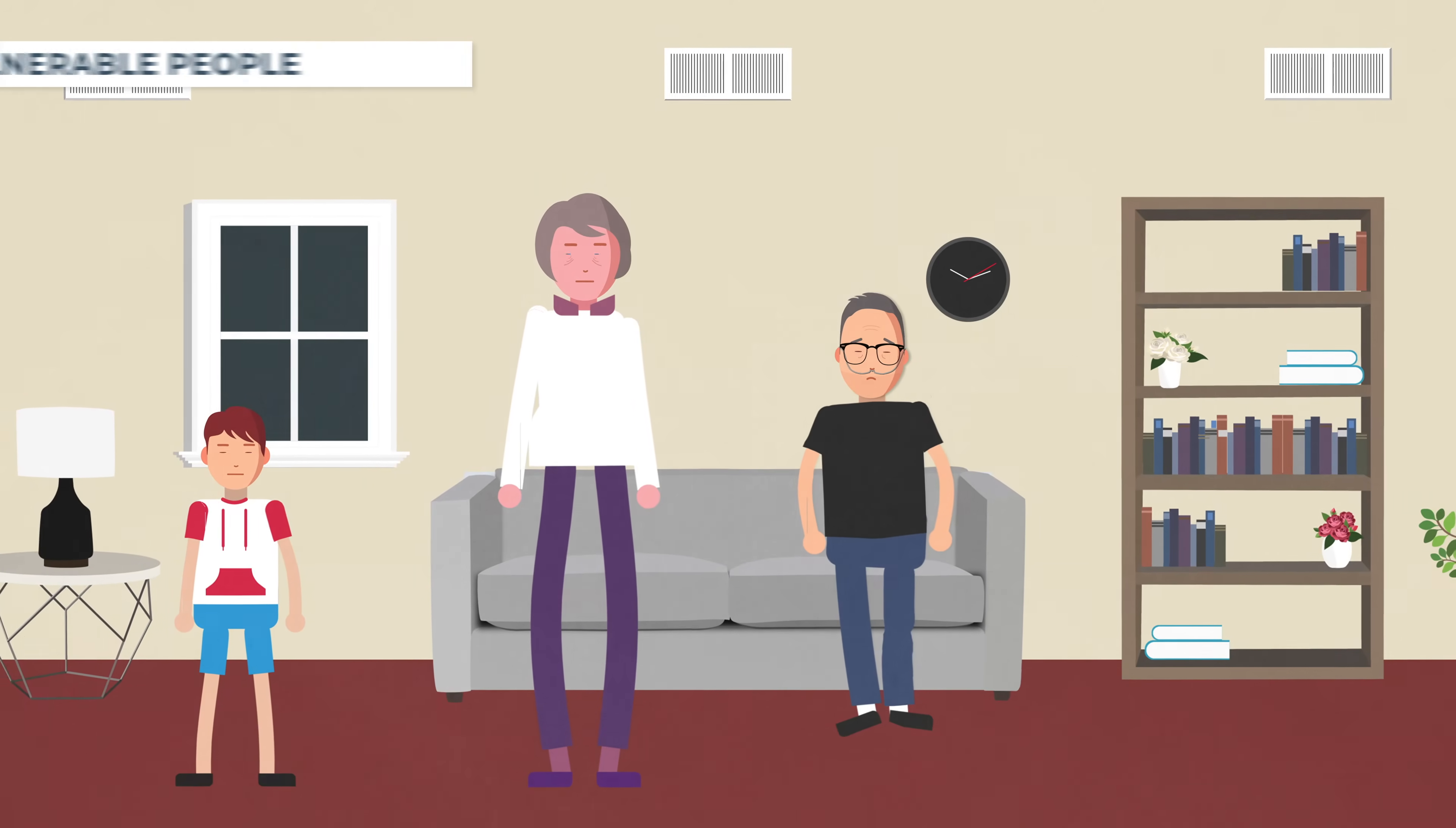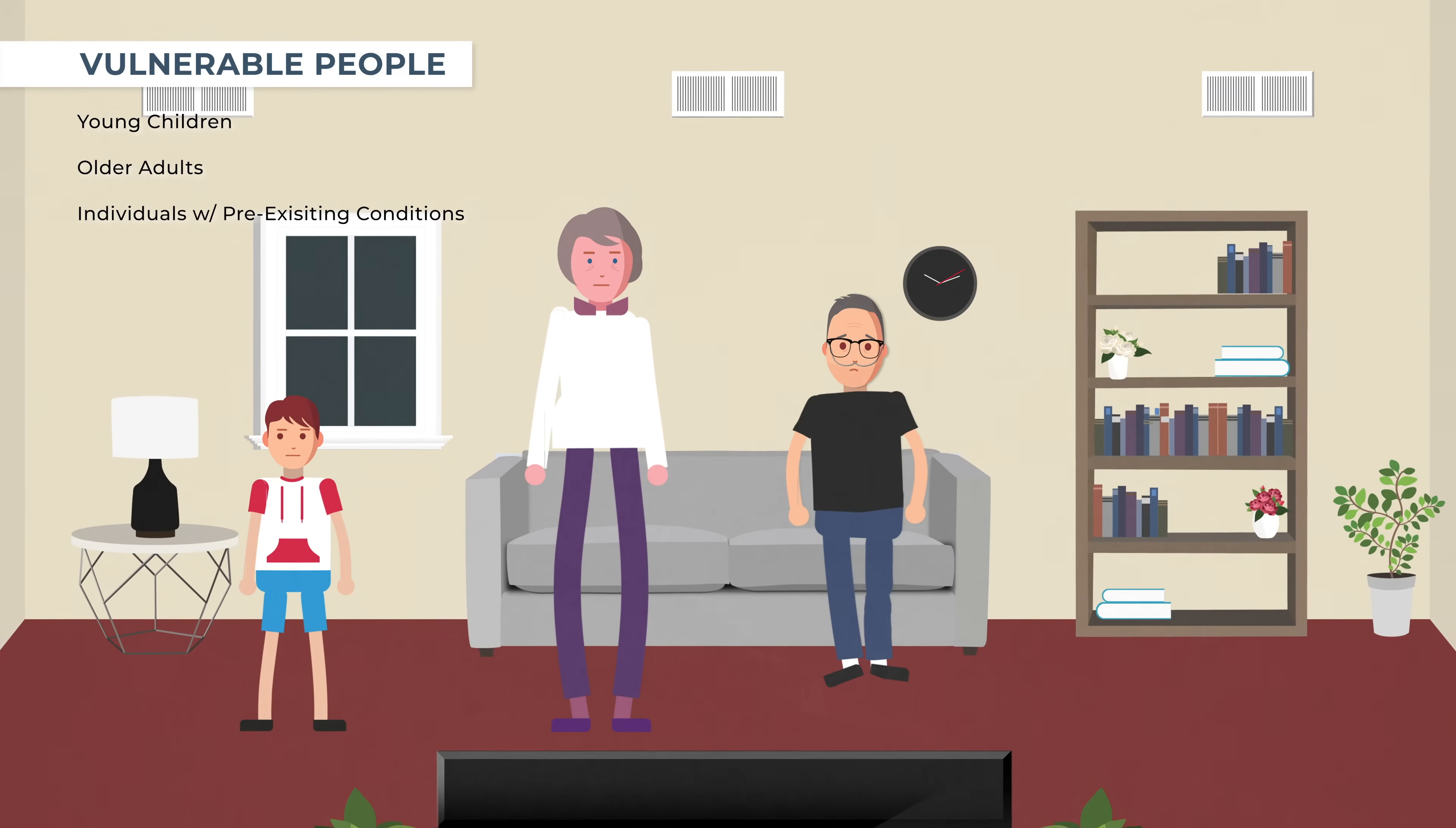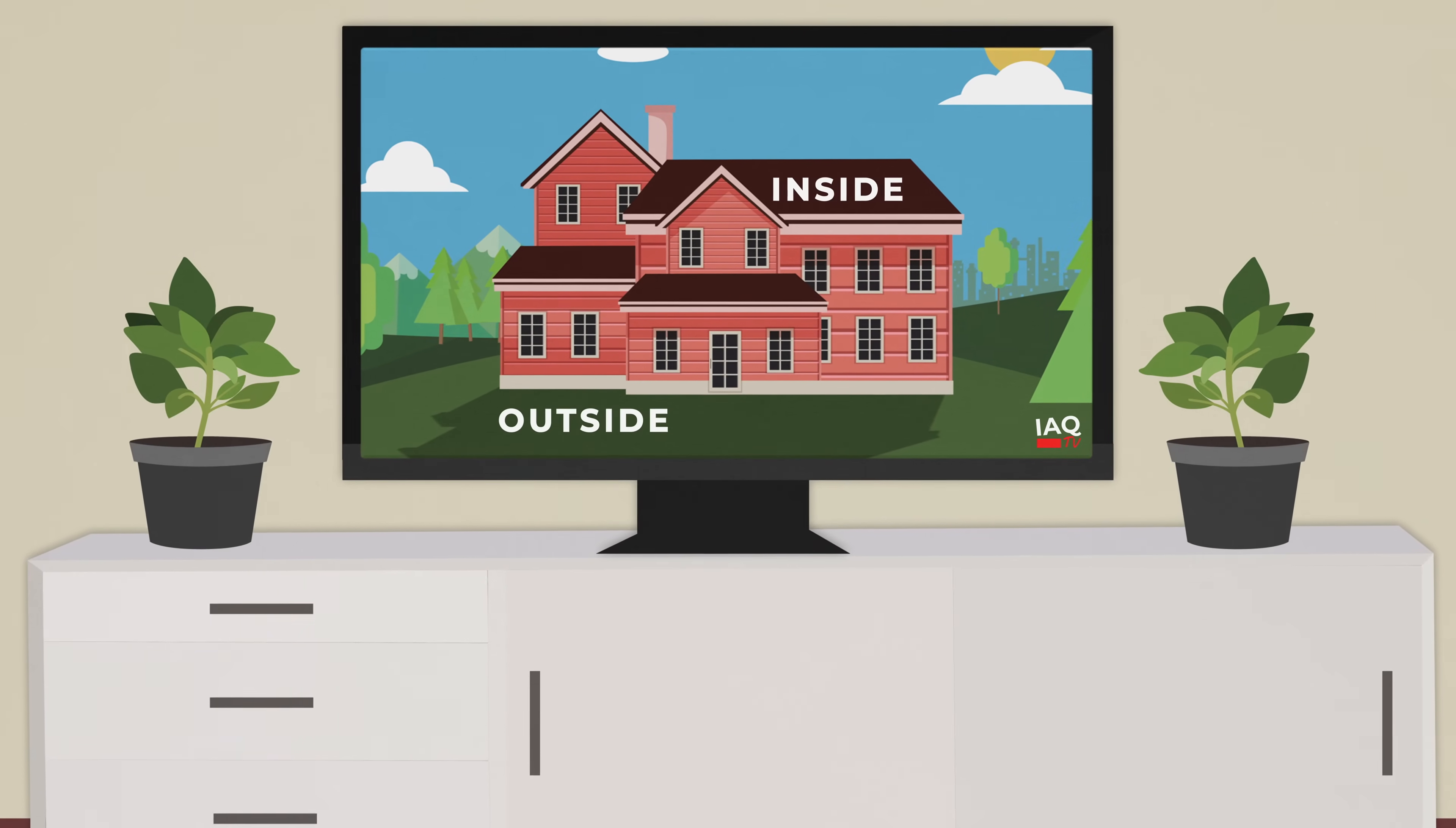People who are often most susceptible to the negative effects of air pollution—young children, older adults, and individuals with cardiovascular or respiratory diseases—tend to spend the most time indoors. If you are wondering where these pollutants come from, most are rooted from sources inside of buildings, although some can be brought indoors from outside.